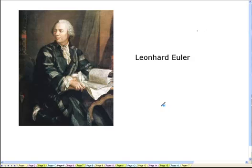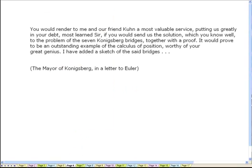The mayor of Konigsberg sent a letter to this famous mathematician who was living in St. Petersburg, not very far from Konigsberg at that time. And in his letter to Euler, the mayor said the following.